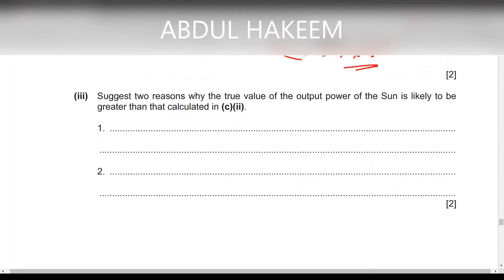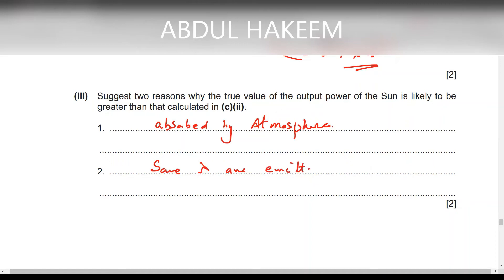The true value of the output power is likely to be greater than calculated. First, some of the power is absorbed by the atmosphere before reaching the earth's surface. Second, some wavelengths are emitted in forms other than visible light and are not fully accounted for in the measurement.